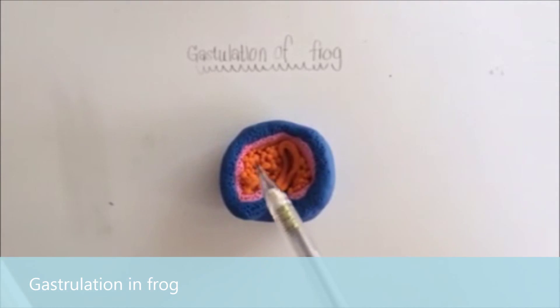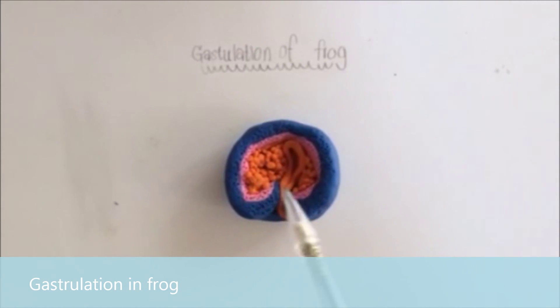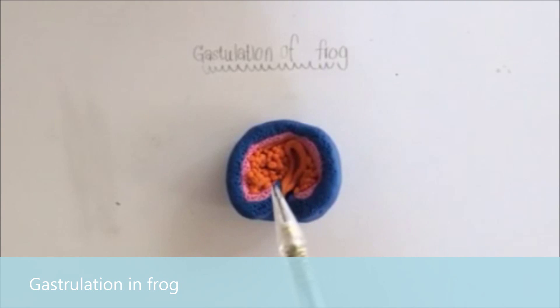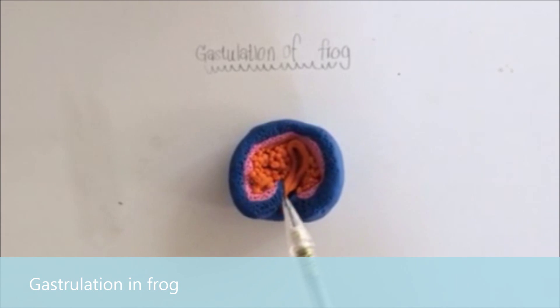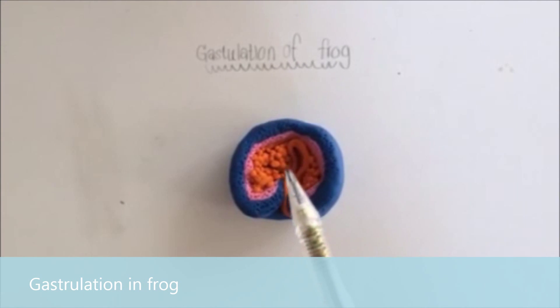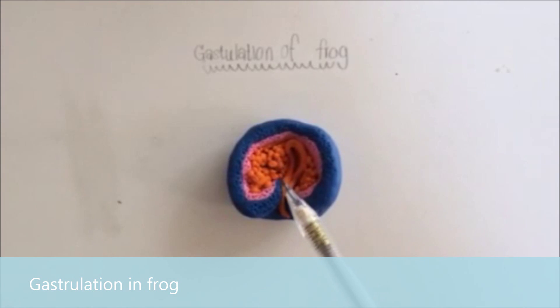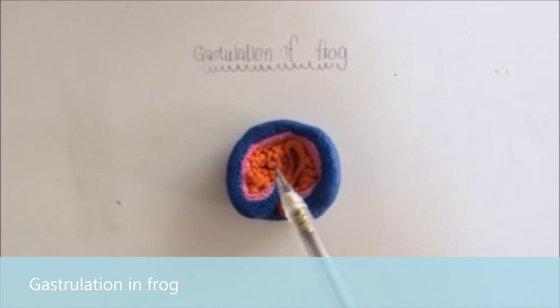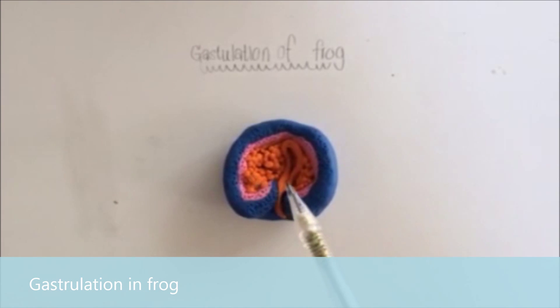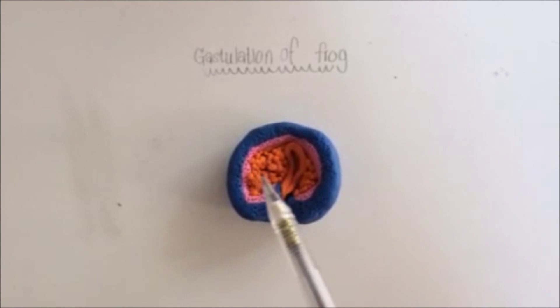Endoderm develops into the inner lining of organs, gut, liver, pancreas, inner lining of lungs, inner lining of the bladder, thyroid, parathyroid, and thymus.